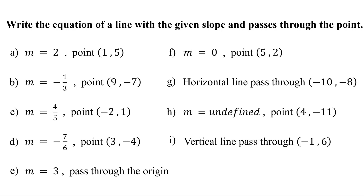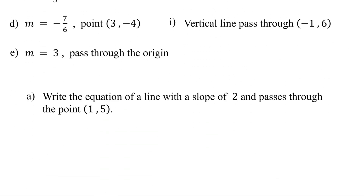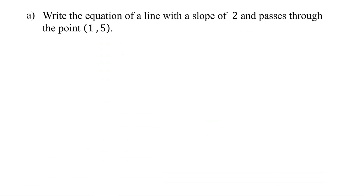In this lesson, you will learn how to write the equation of a line given its slope and a point it passes through. The most straightforward form of a linear equation to use when given the slope and a point is the point-slope form. In this form, m represents the slope and x1, y1 represents a point that the line passes through.